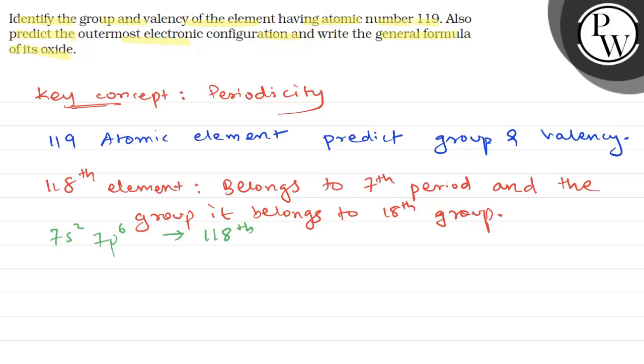Since p orbital is completely filled, after p, s filling starts. So 8s filling starts. Therefore, what happens, we can say last electron for...